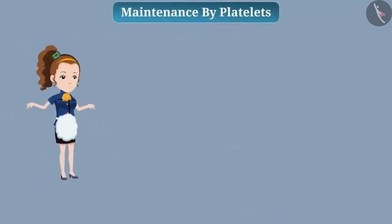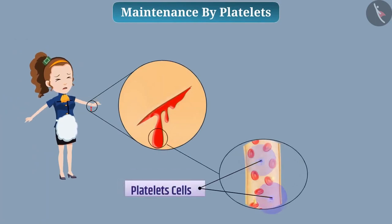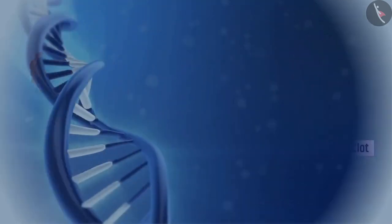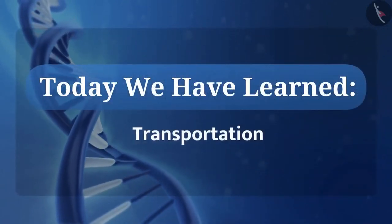When we get hurt, platelets in the blood stop the bleeding. These cells make a blood clot at the place of bleeding and stop it. So today we learned about transportation.